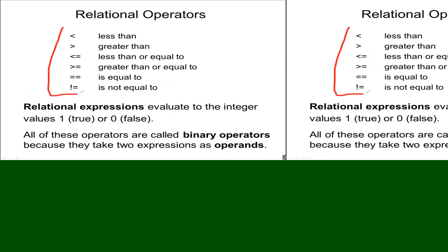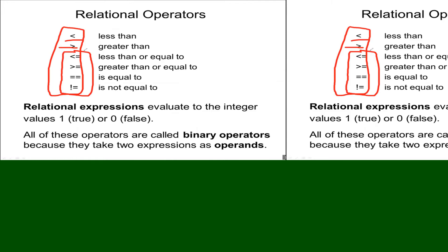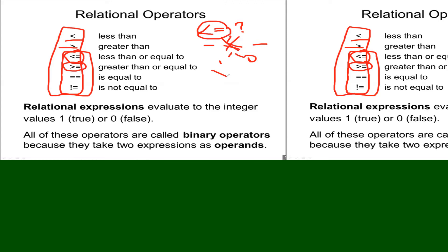From mathematics, everybody knows less-than and greater-than. Now, in mathematics we write less-than-or-equal as a single symbol, and the result is always one or zero. But in C, we cannot type that mathematical symbol on a keyboard, so we use the less-than sign and equal sign together as one operator.